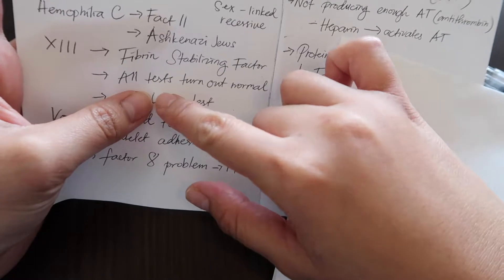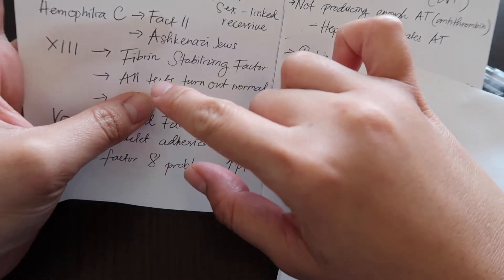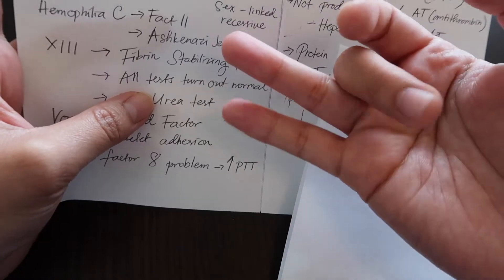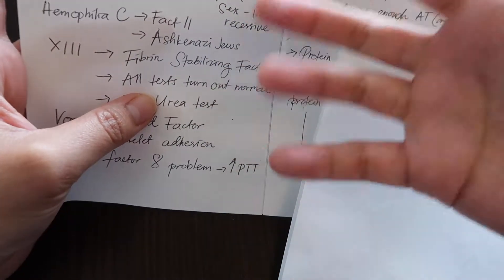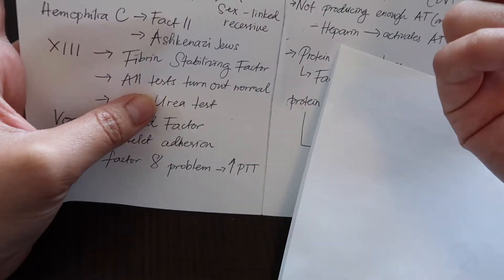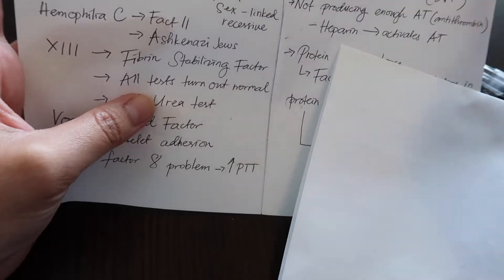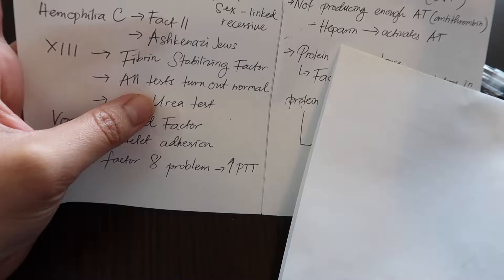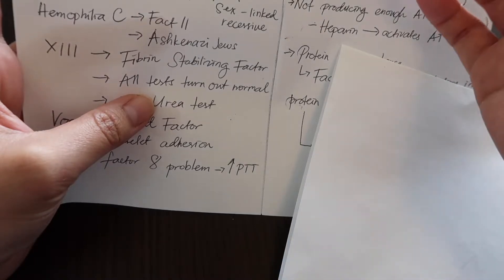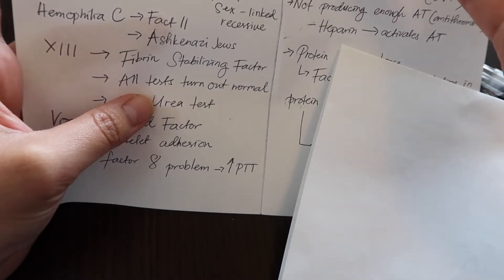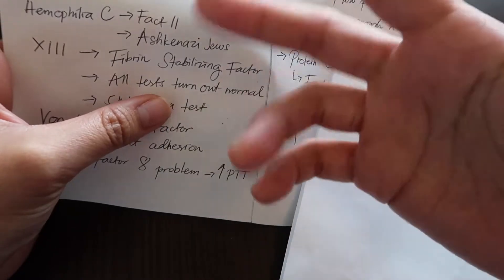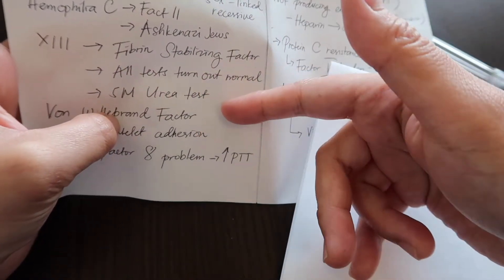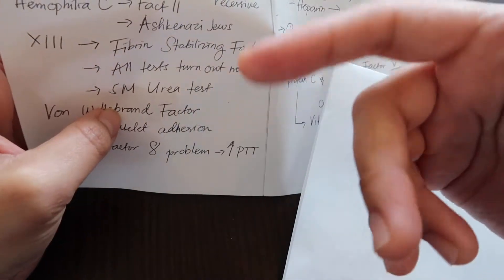The thing with this is that every result you'll get from PT, PTT, and bleeding time, all of the results are going to turn out normal because you're producing the right amount, you're not deficient of anything, but it's just that it's not stable. It can come off so you can bleed again.